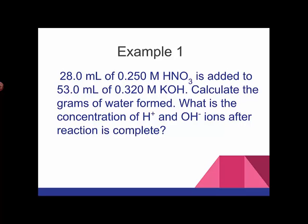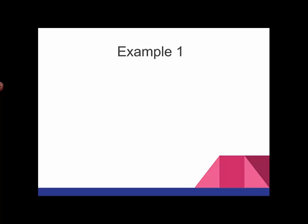Okay, so we have a strong acid reacting with a strong base. So the first thing would be good to do would be to get the equations. So we can start with a full molecular equation for this thing, which is HNO3 plus the KOH goes to H2O plus KNO3.